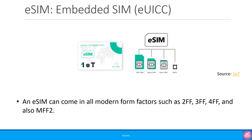Embedded SIMs or eSIMs are an evolution of the SIM card designed to address the limitations of traditional SIMs. They incorporate new functionality needed to enable the world of IoT devices. It is a common mistake to refer to an embedded chip SIM, MFF2, as an eSIM, but that's not always the case — an eSIM can come in all modern form factors such as 2FF, 3FF, 4FF and also MFF2. In the rest of this presentation, when we say eSIM, we are specifically referring to MFF2.